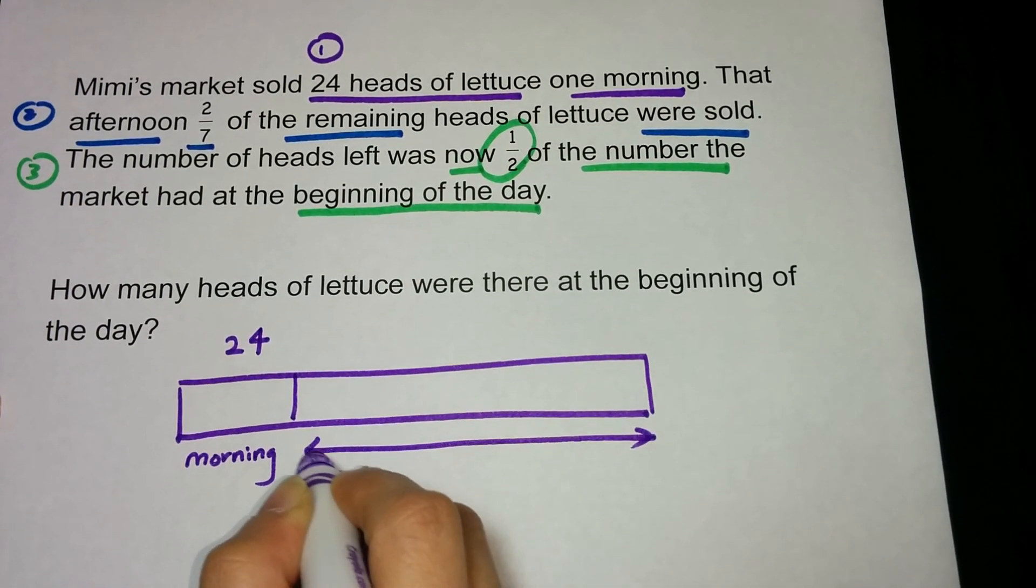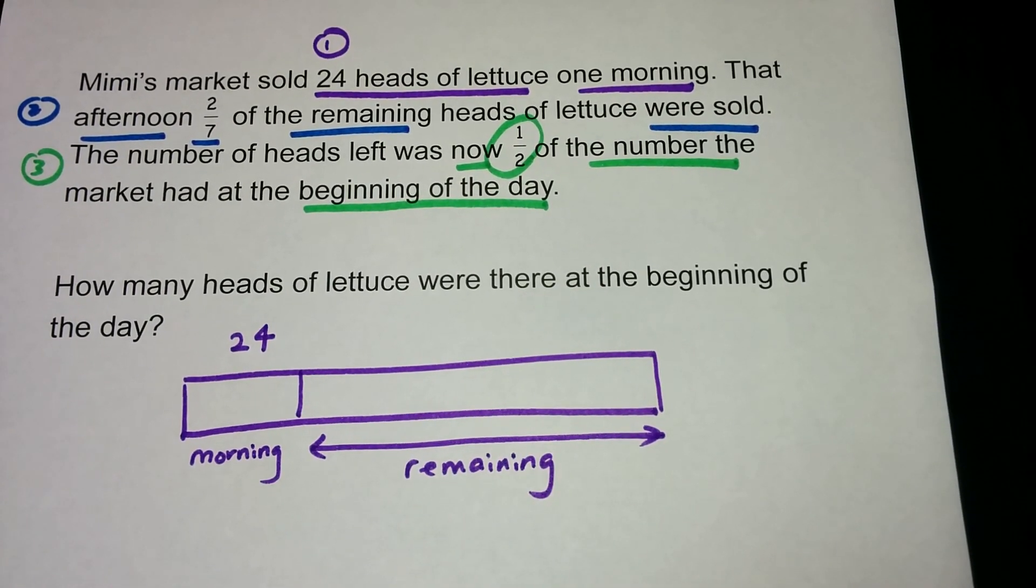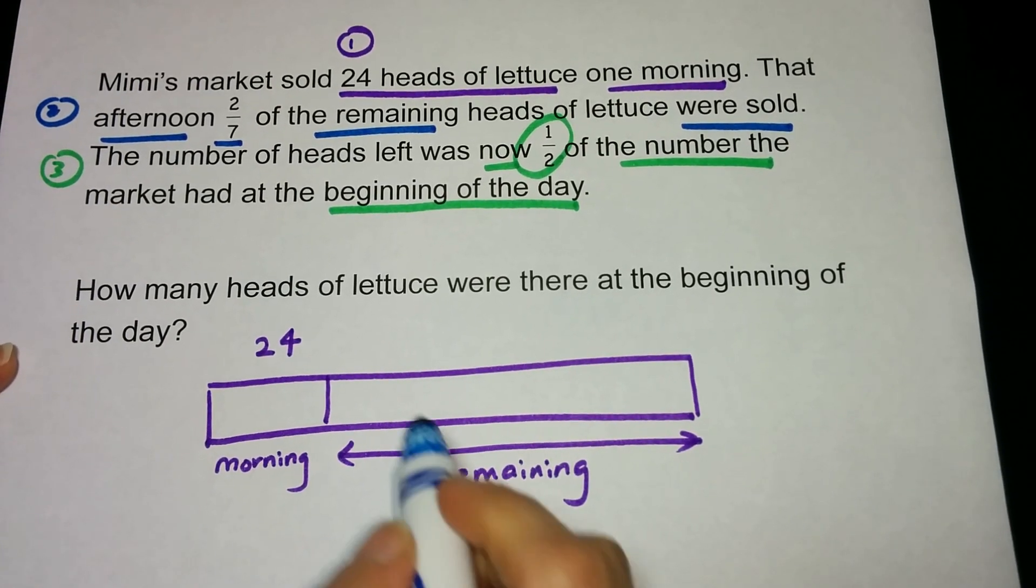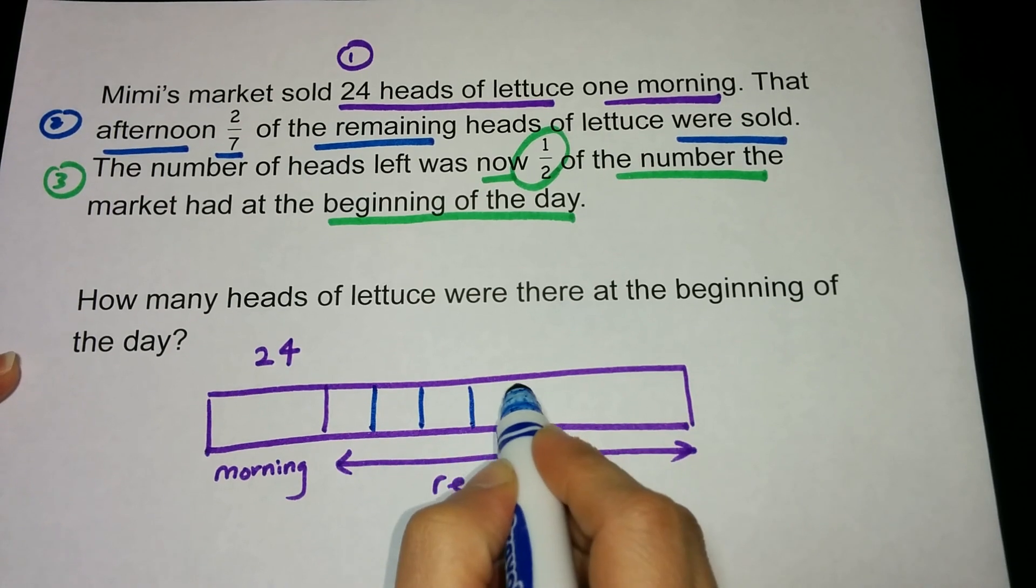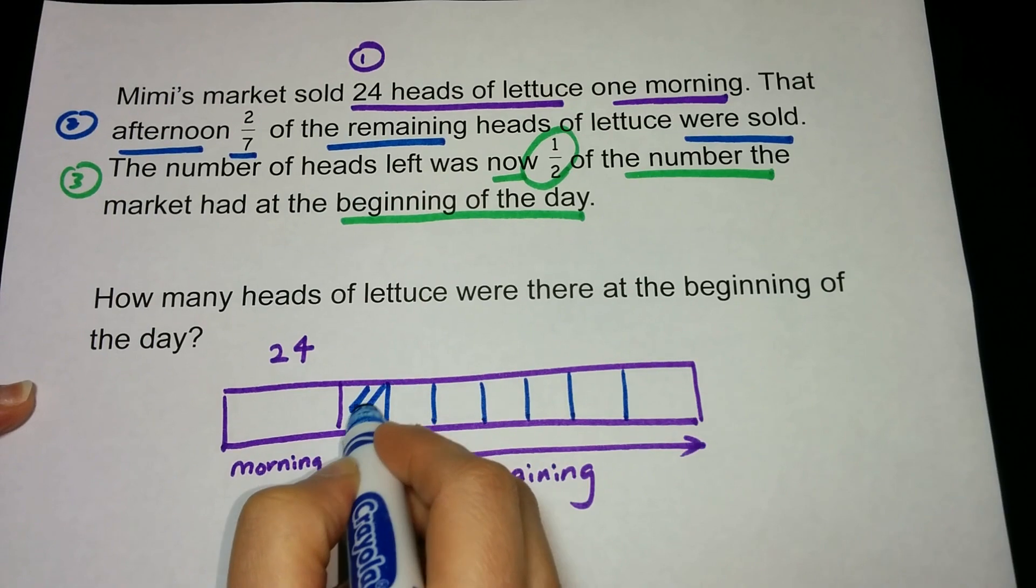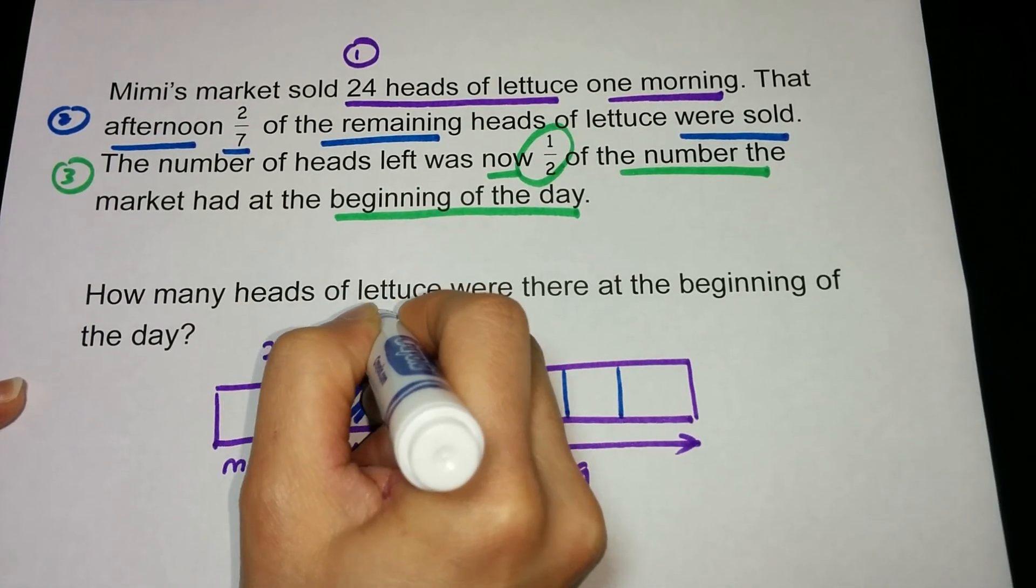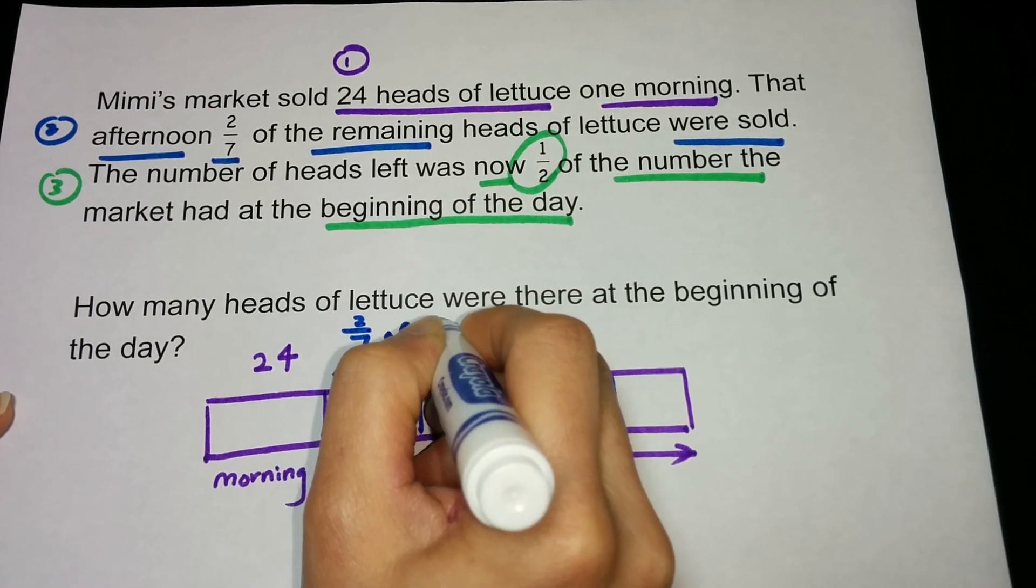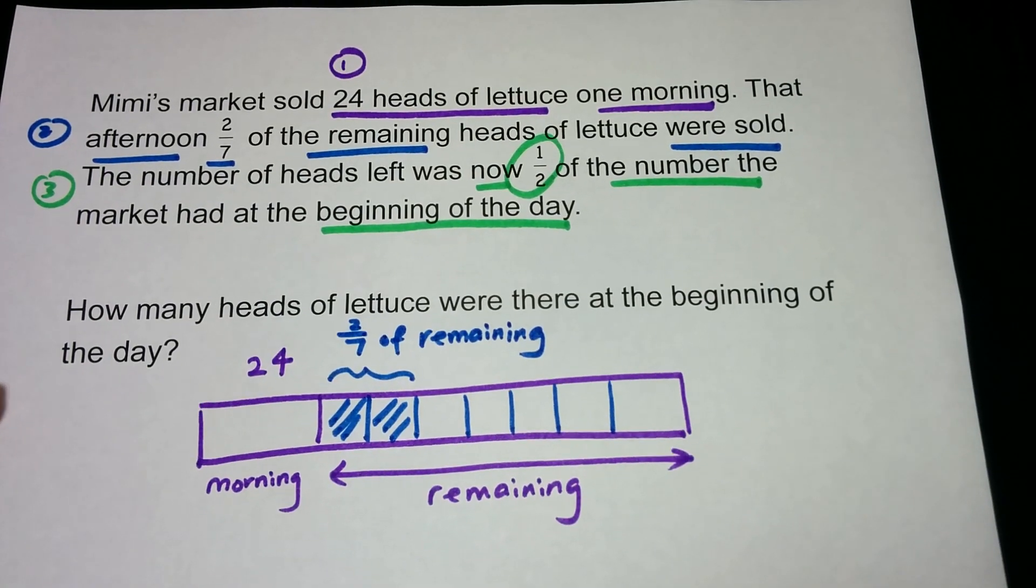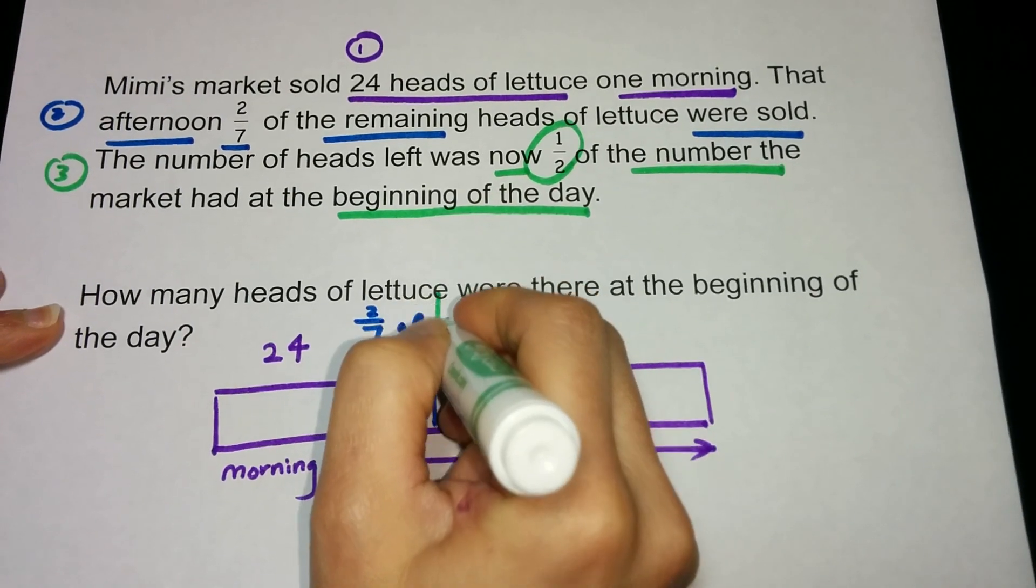This is what is remaining. In the afternoon, 2/7 of the remaining was sold. So 2/7 of the remaining, this is sold in the afternoon. So what do we have now? What is left?